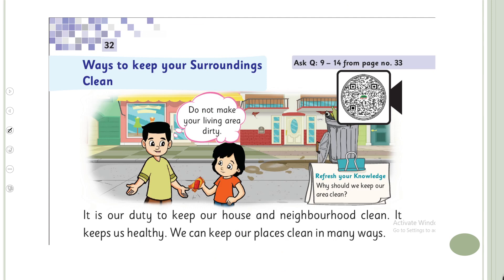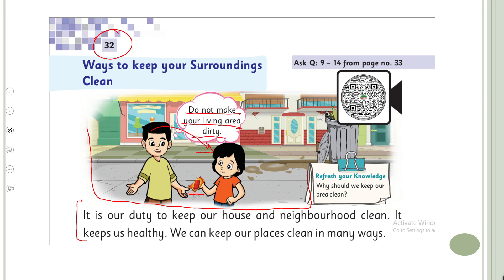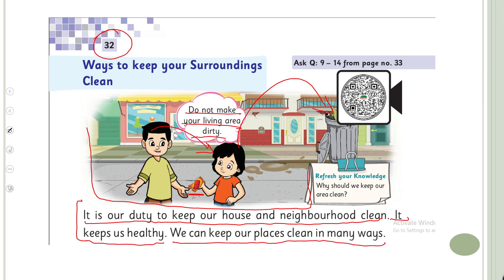Now open page number 32 in your books. Pause the video and open the page. Today we will do only the reading paragraph on this page. Look at the picture — they are talking to each other. A girl was throwing trash on the floor, and the boy is telling her: do not make your living area dirty, always throw the trash in the dustbin. That is how you can keep your neighborhood and surroundings clean. Now follow along: 'It is our duty to keep our house and neighborhood clean. It keeps us healthy. We can keep our places clean in many ways.'